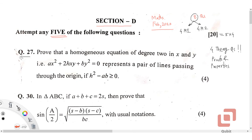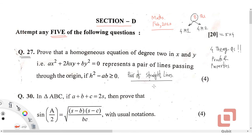Let us start with Question 27. Question 27 is: prove that a homogeneous equation of degree 2 in x and y, i.e. ax² + 2hxy + by² = 0, represents a pair of straight lines passing through the origin if h² − ab ≥ 0. This is a theorem in the chapter 'Pair of Straight Lines', and you can easily find the proof in the Paper 1 textbook.